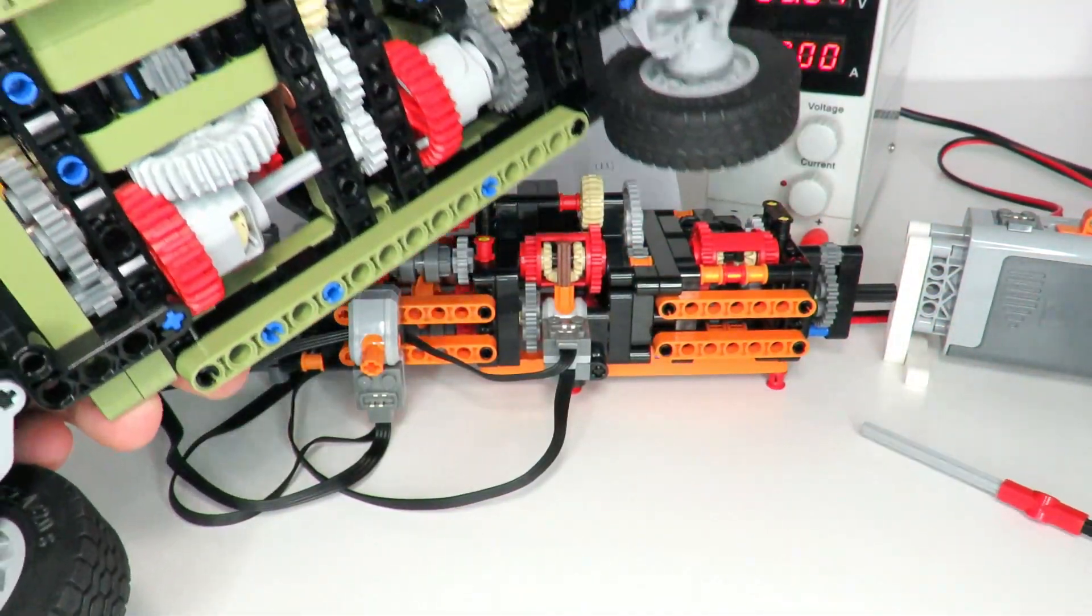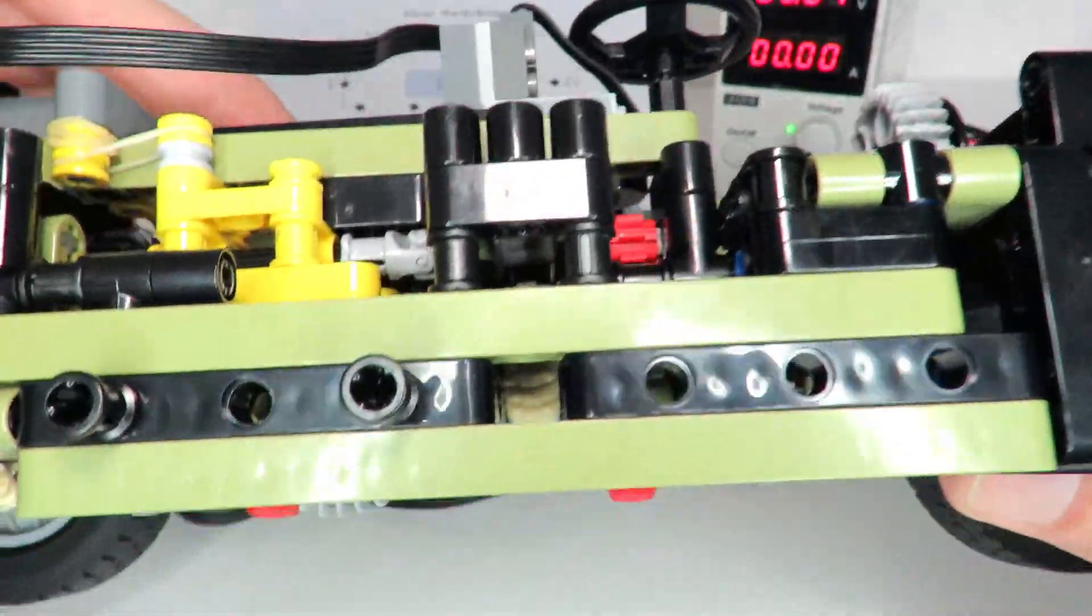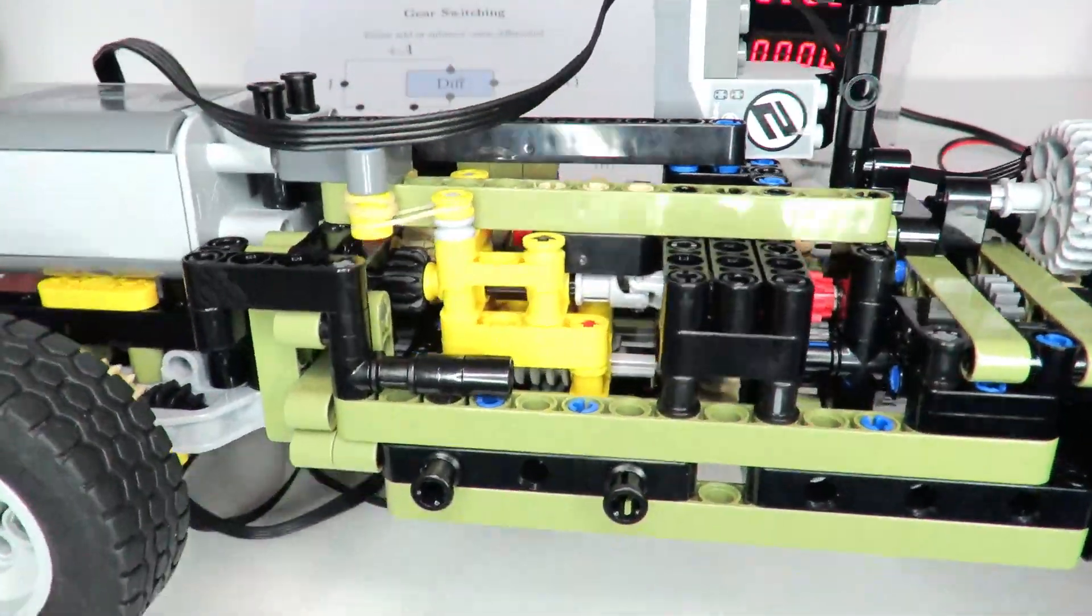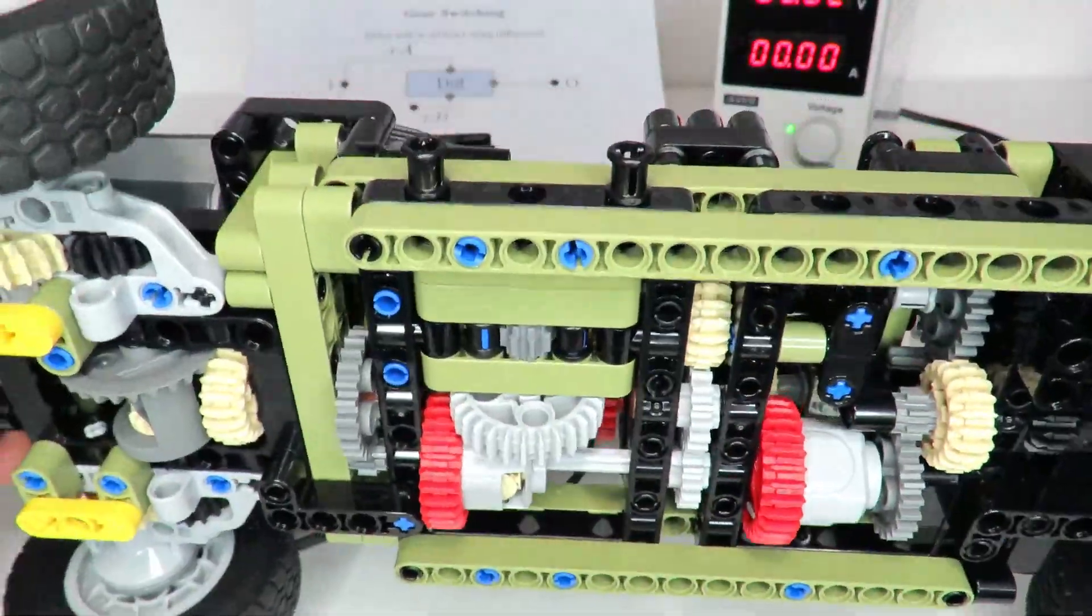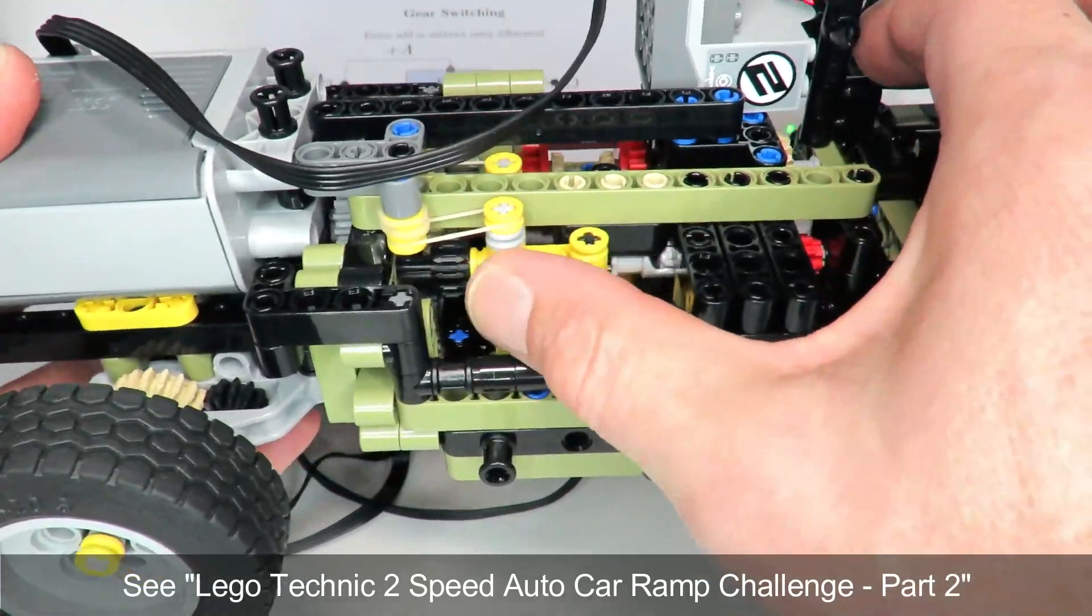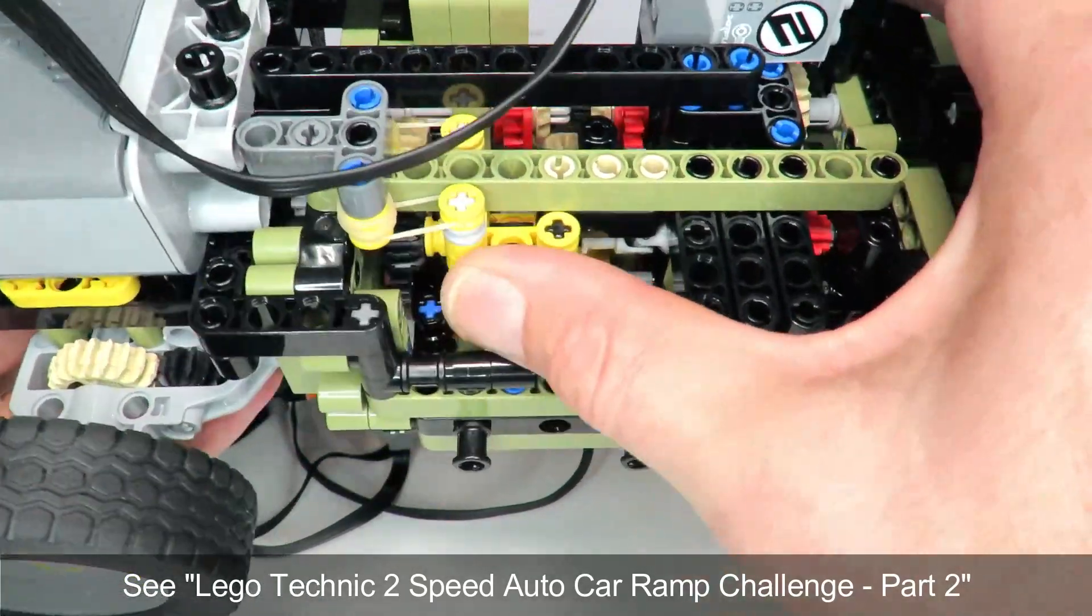So the idea for this gearbox came about from having presented many different types of two-speed automatic gearboxes, and one of my most successful ones has been this one that's been implemented into a two-speed automatic car. In the last video I presented this car driving up a ramp successfully - it was about 45 degrees.